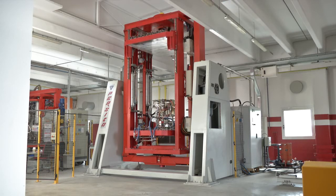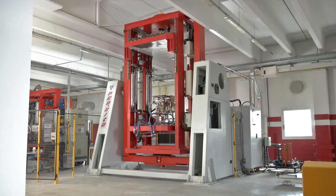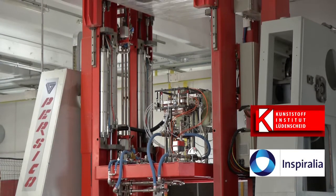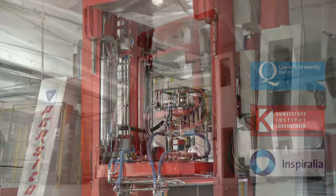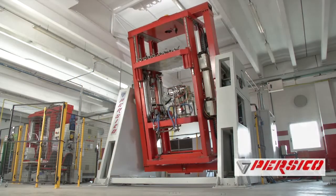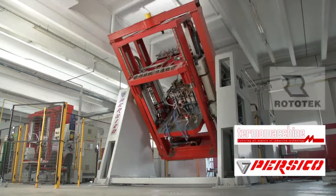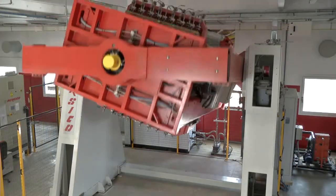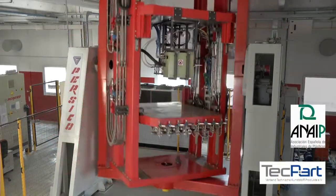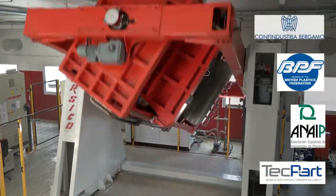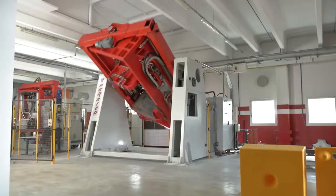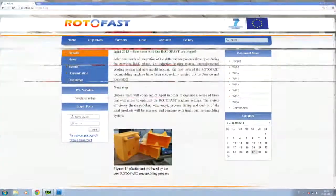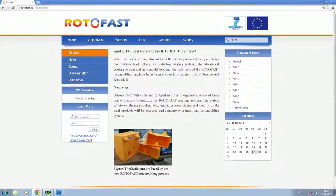The member partners in this project include three international research centres: Spiralia, Kunststoff, Queen's University; companies of different dimensions: Persico, Thermomakine, Rotatec, Frog Plastics; and industry associations: Techpart, ANAIP, BPF, Confindustria Bergamo. Detailed information about the partners and the main activities of the project can be found at the website rotofast.eu.